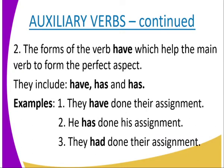The forms of the verb 'have' help the main verb to form the perfect aspect. The forms of 'have' include: have, has, and had. These are the three forms of 'have.'